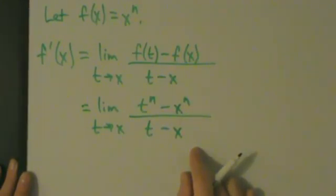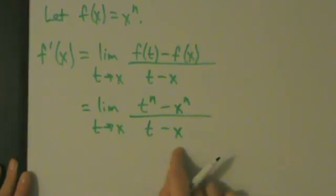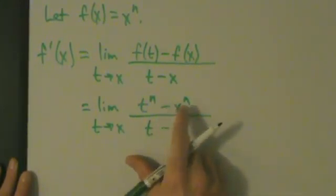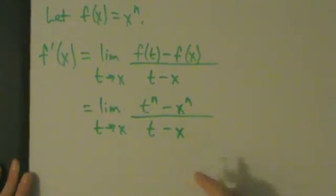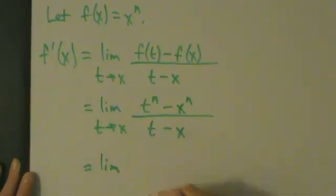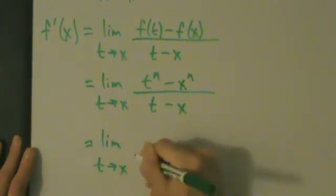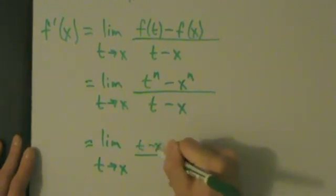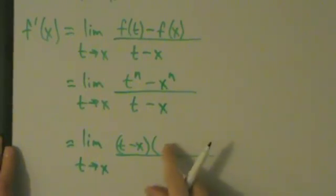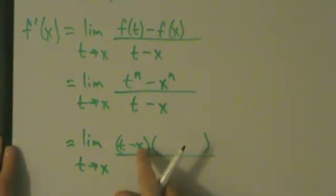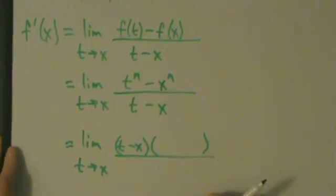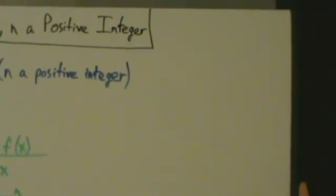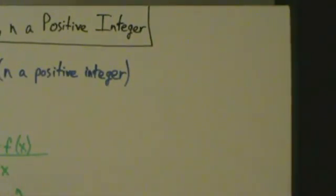So remember, what we want to do is try and factor somehow so that we can get rid of this t minus x. And actually we can. If n is any positive integer, then t to the n minus x to the n can always be factored to pull out a t minus x. So let's come off to the side and look at a couple of specific cases.